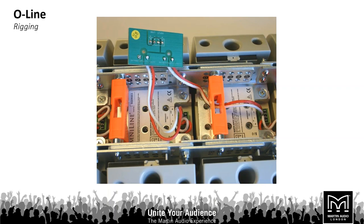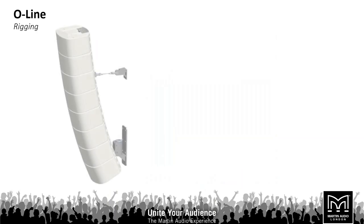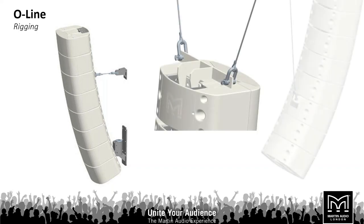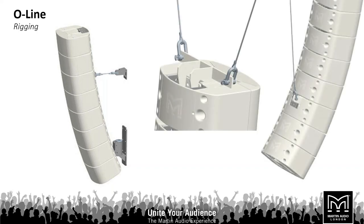There are two ways to rig the system: we can either wall-mount it, where the wall bracket attaches to the lower section of the array and a pullback-type system near the top helps achieve the optimal array aim and secure it; or it can be flown from steel wire using the eyebolt positions in the top of the flying bracket, with a pullback-type bracket attaching to the lower portion of the array.